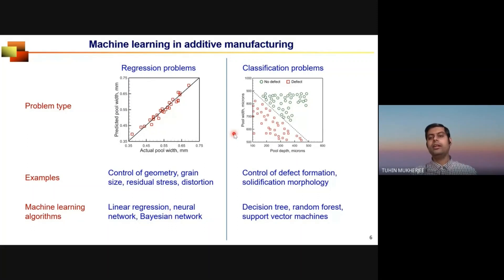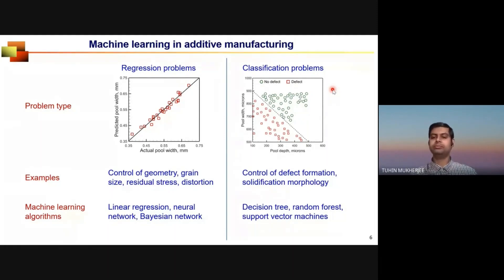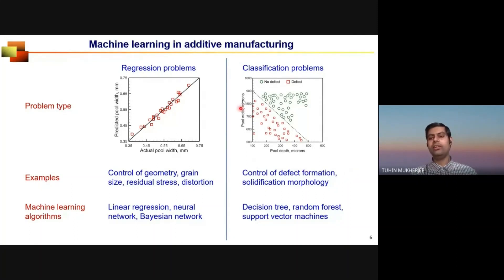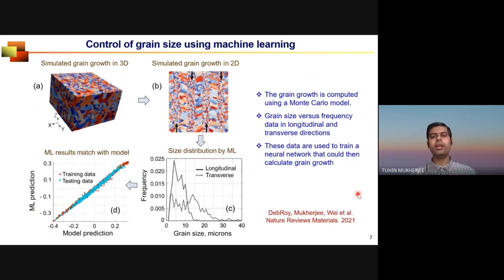The other type is classification — essentially a yes/no problem, such as predicting whether a defect will form or not. Another example is solidification morphology: columnar grains (Class A) versus equiax grains (Class B). Algorithms commonly used for classification include decision trees, random forests, and support vector machines.